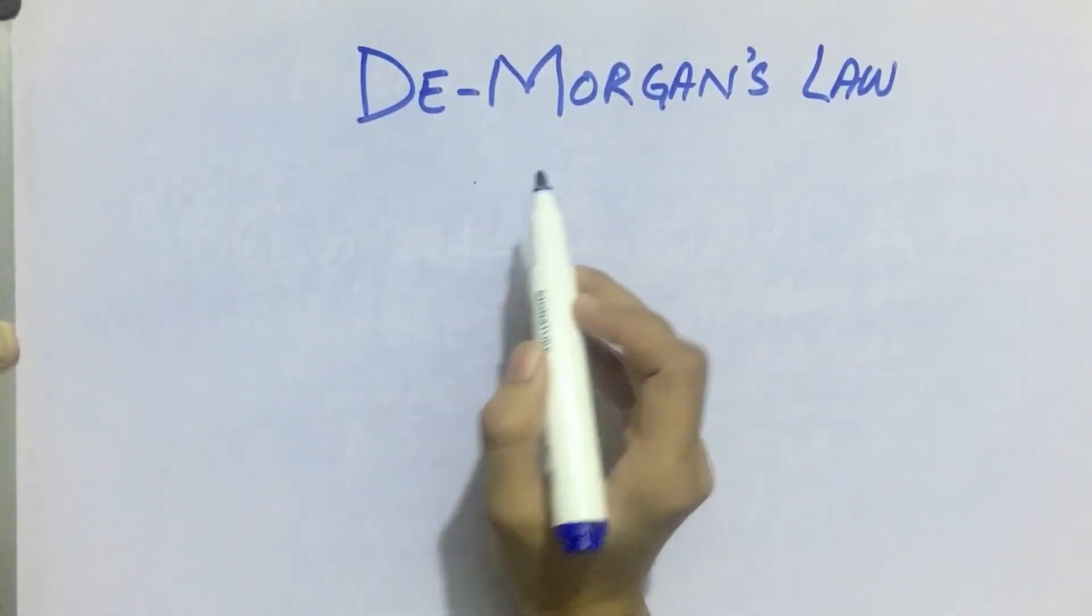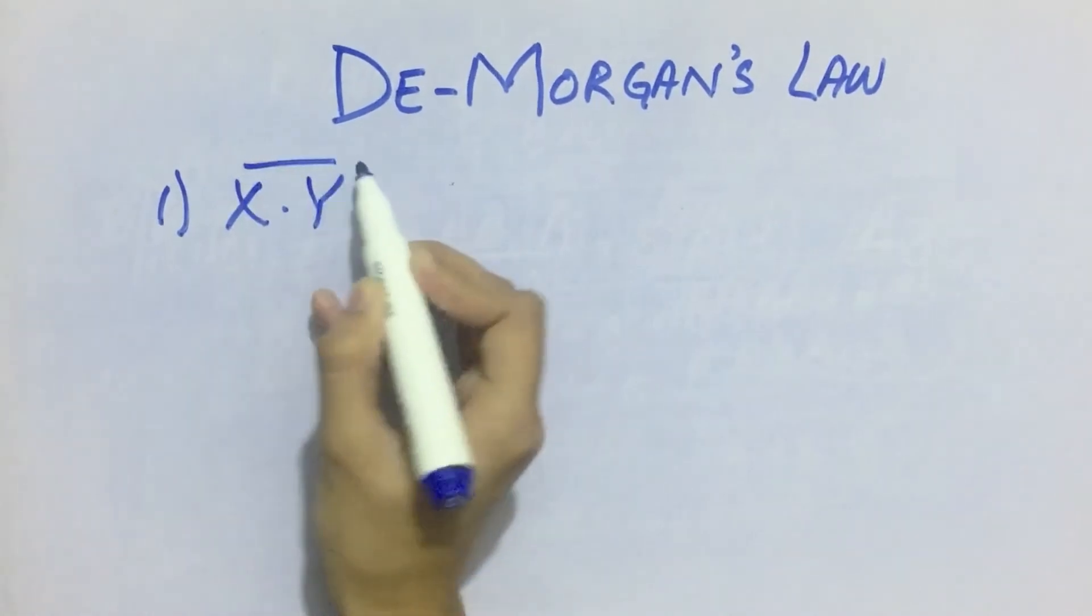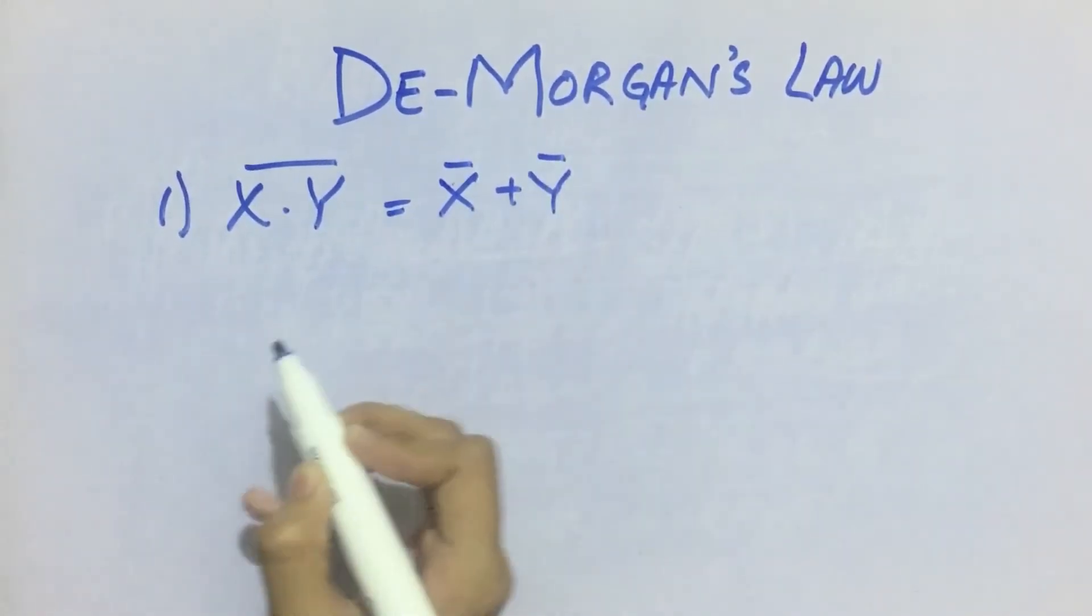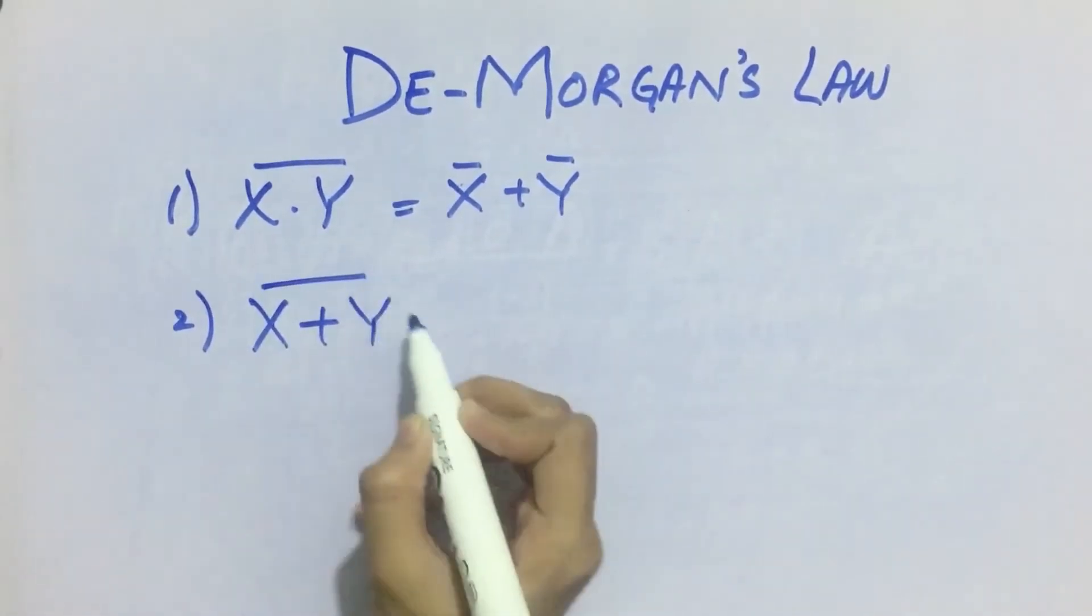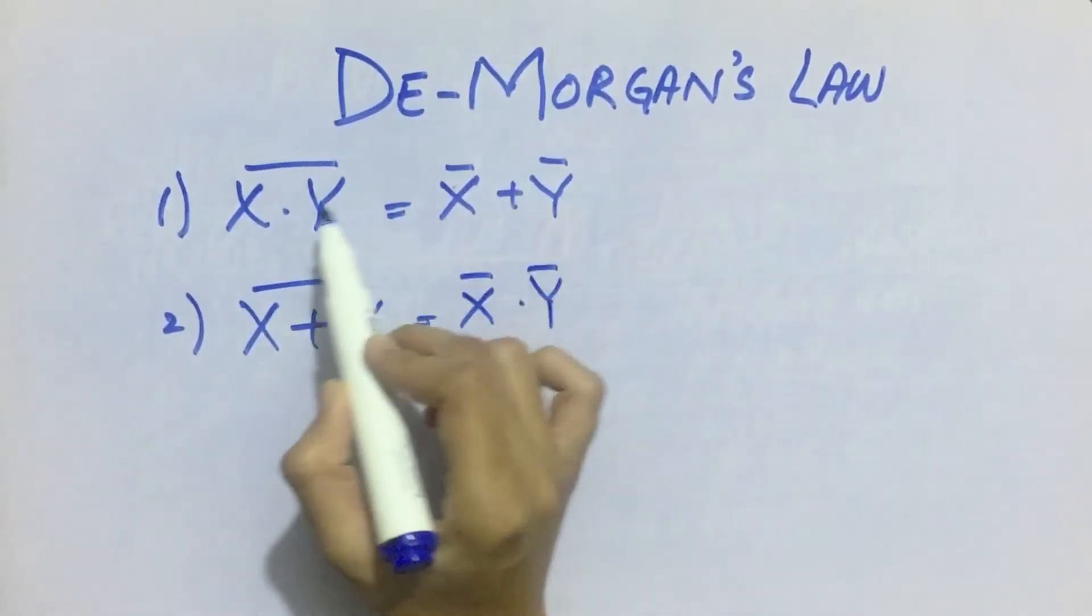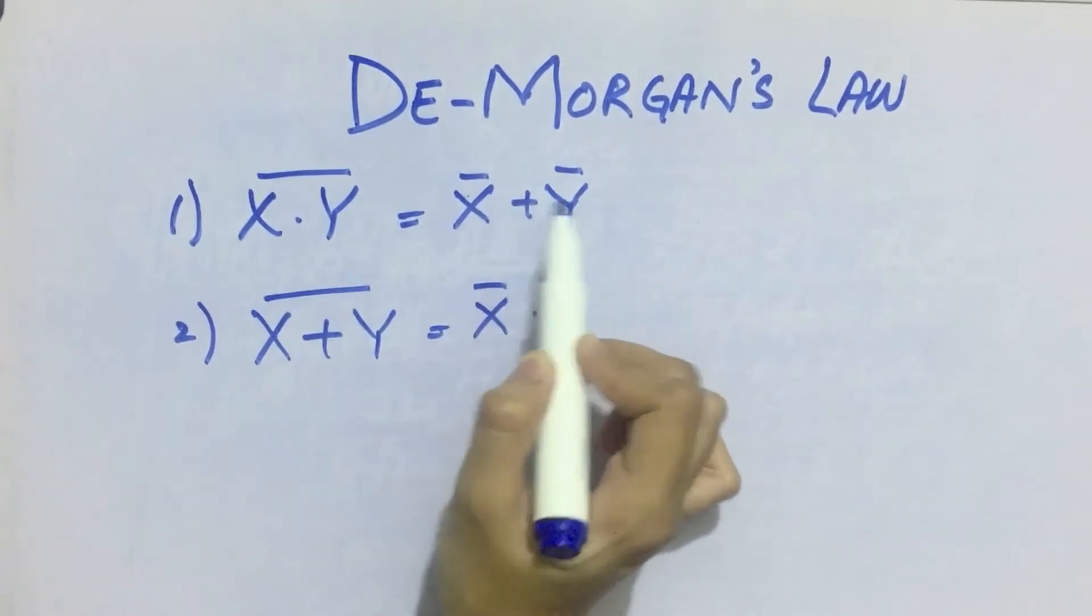Now we have two laws of De Morgan. Number one is x into y whole bar equals x bar plus y bar. And x plus y whole bar equals x bar into y bar. So it means that in De Morgan's law, we have to break the bar and change the sign.